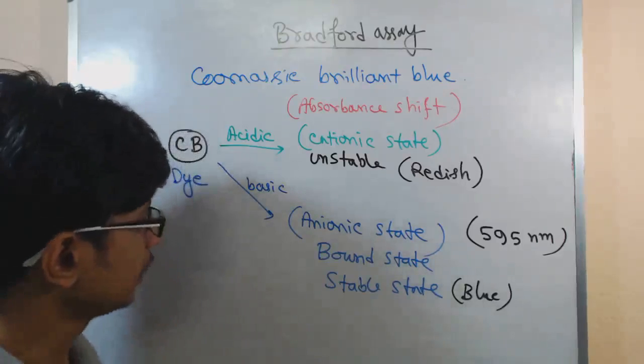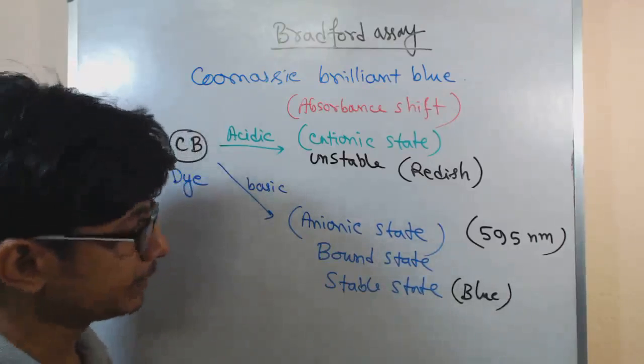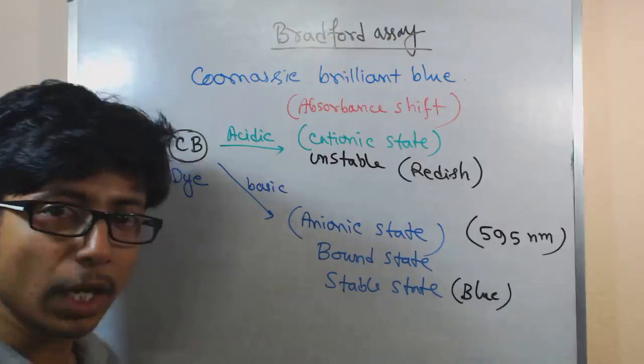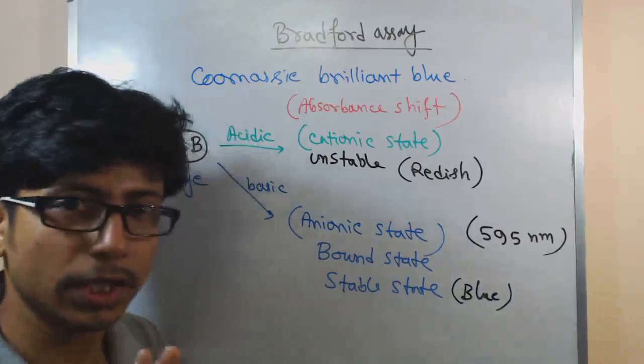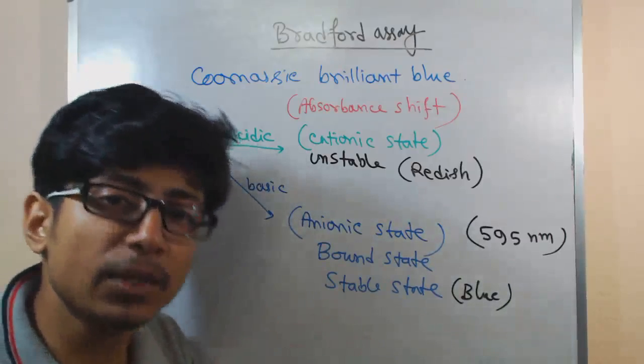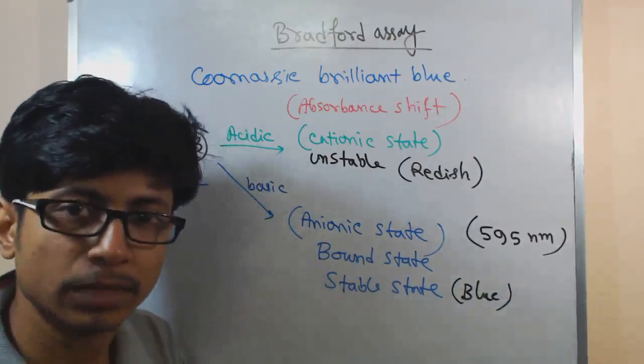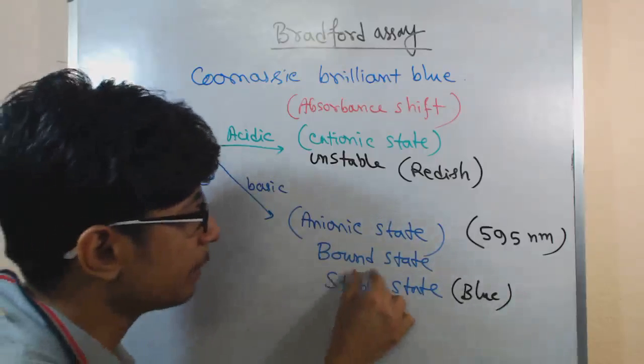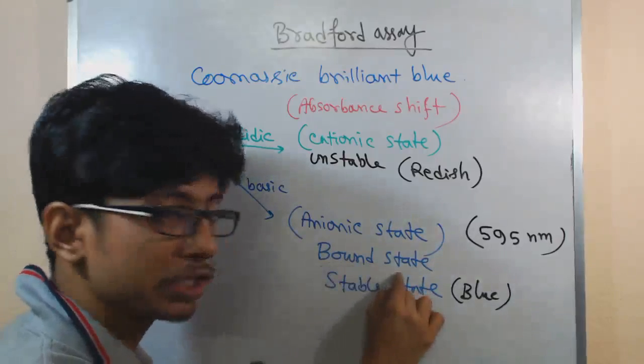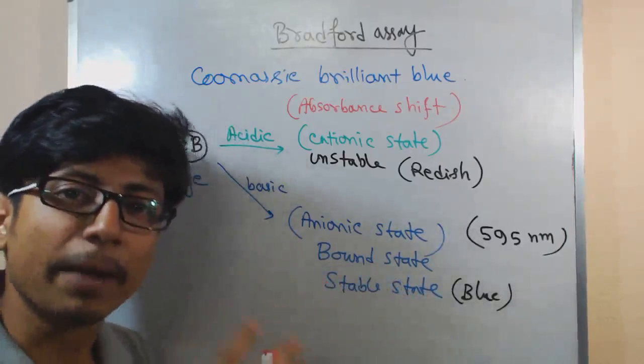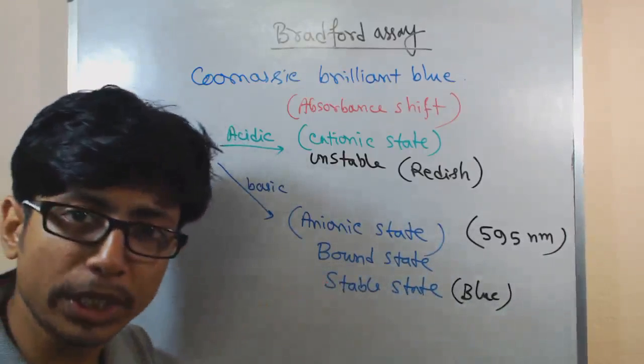Because in this case, the protein content, the amino acid, the charged amino acid in protein, they will form bonds, ionic interactions, Van der Waals interactions with this dye and make this dye stable and convert this dye with stable form, also called bound state, because now it is bound with the amino acids, bound with the proteins.